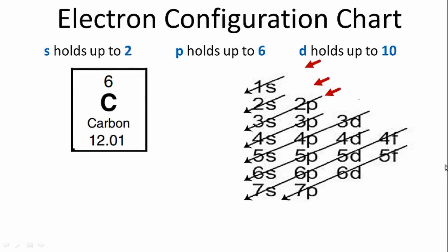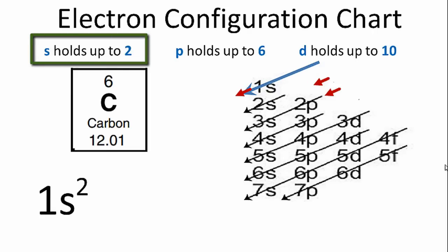So we'll use the table on the right to get the correct electron configuration notation. We'll go down first the 1s, and s orbitals hold up to two electrons. So we'll put a 2 in there to show we have two electrons in that first energy level, that 1s².